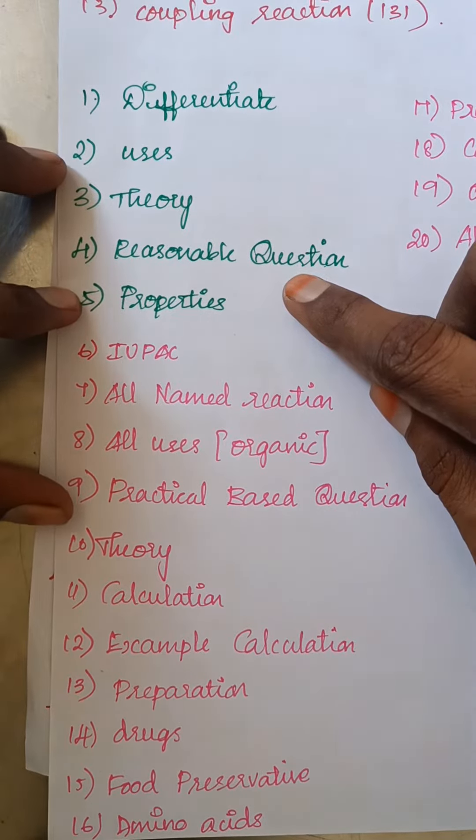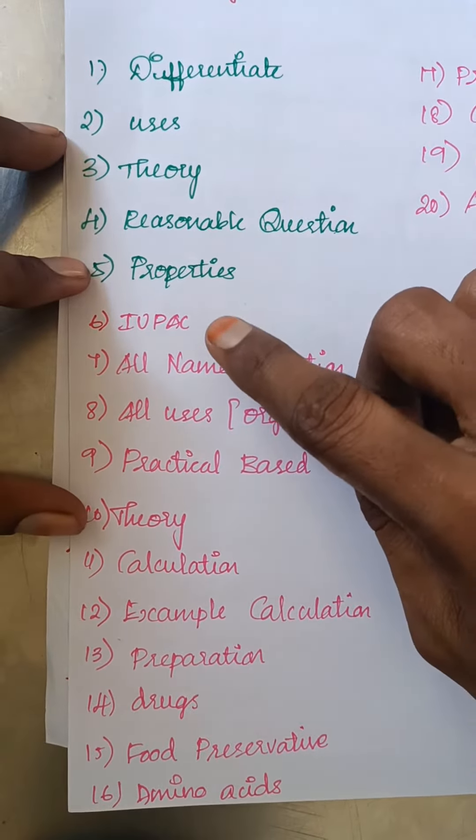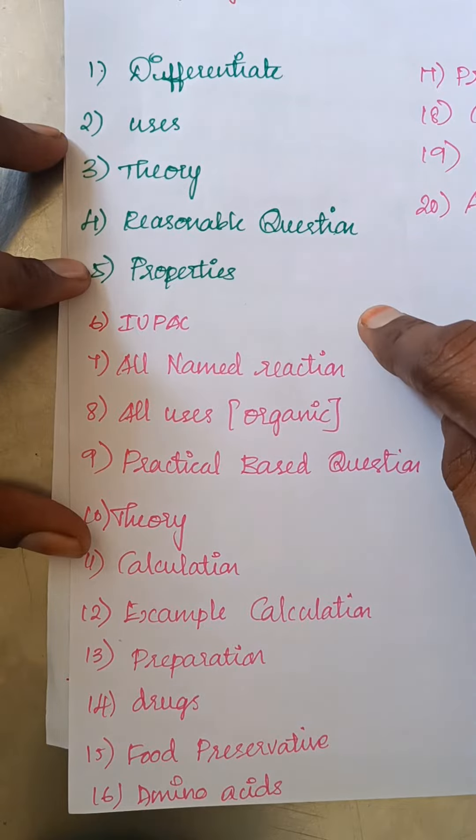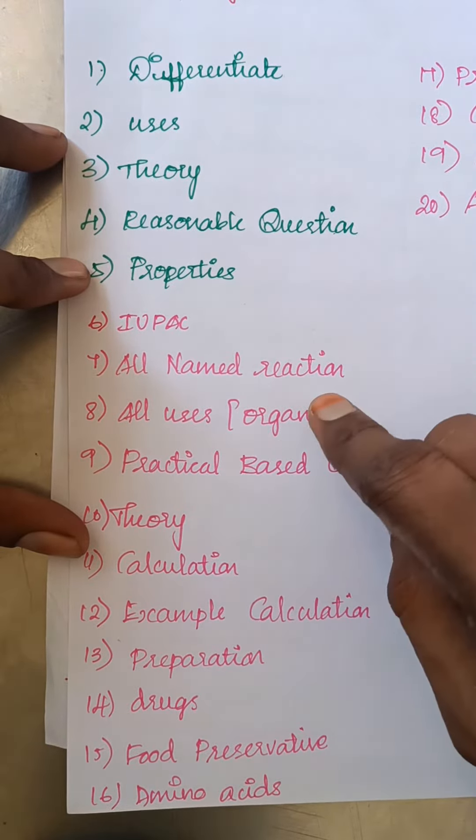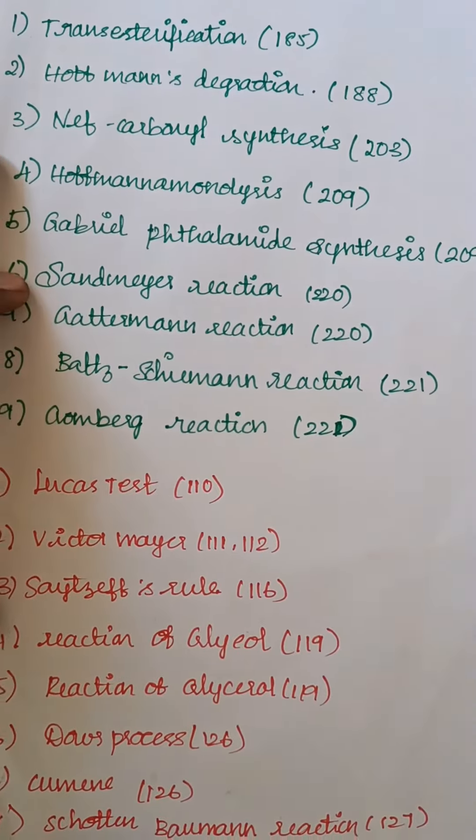The next one is Organic. IUPAC, we will talk about all IUPACs, all naming reactions. For example, naming reactions as a list.